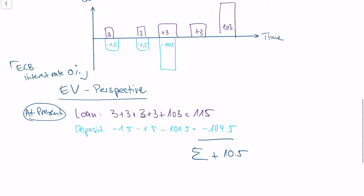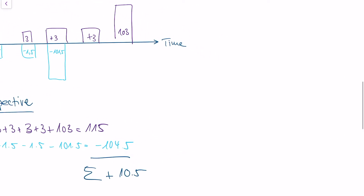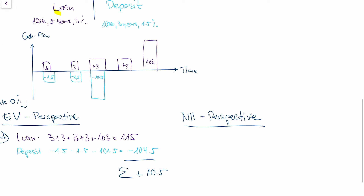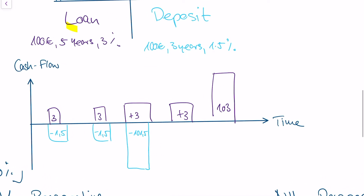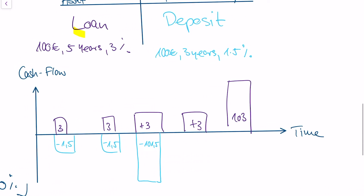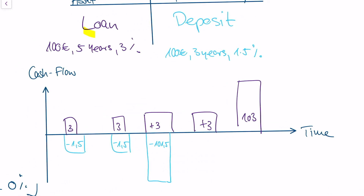The second perspective is the so-called net interest income perspective, or NII perspective. This perspective looks at the cash flows in time. We see that in the first year, the bank gets 3 euros and pays 1.5 euros — great, we're making a profit. In the second year, the bank again gets 3 euros and pays 1.5 euros — great as well.